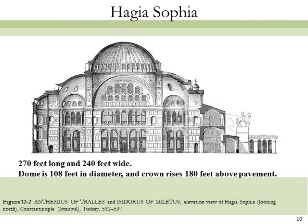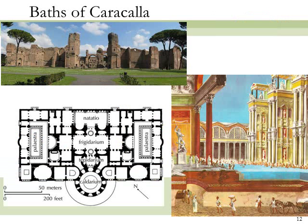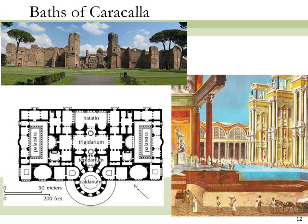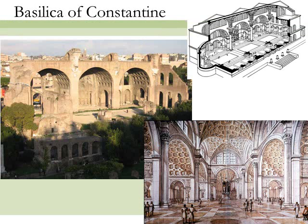Hagia Sophia's dimensions are formidable for any structure not made of steel. In plan it is about 270 feet long and 240 feet wide. The dome is 108 feet in diameter and its crown rises some 180 feet above the pavement. In scale, Hagia Sophia rivals the architectural wonders of Rome including the Pantheon, the Baths of Caracalla, and the Basilica of Constantine.